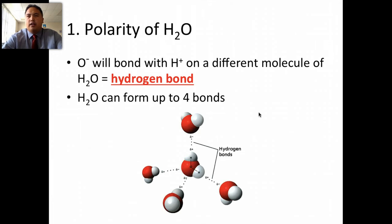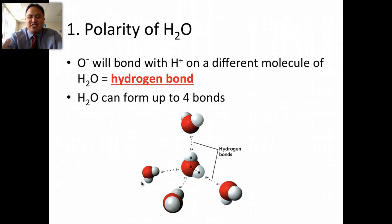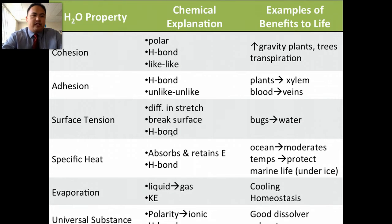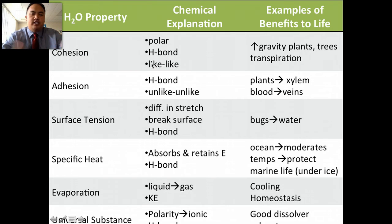Then we talked about the special properties of water — there's a whole chapter we did on water. In water we have hydrogen bonds. The positive and negative polarity in water molecules means the positive charge of hydrogen is slightly attracted to the negative charge of the oxygen atom of another H2O molecule. It can form up to four bonds, as you can see in this picture. Water is cohesive, meaning cohesiveness means it sticks to itself — like to like, so it sticks to itself.